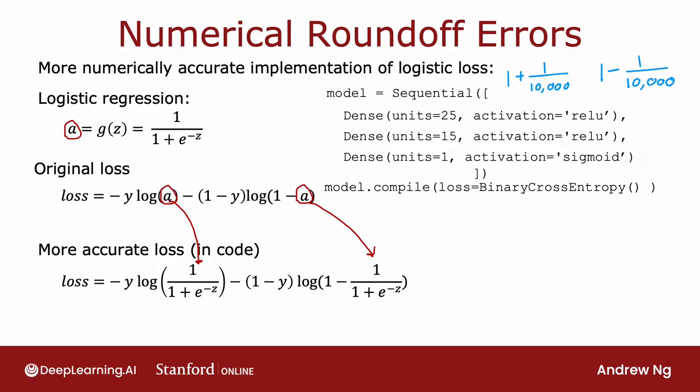This original implementation was insisting on explicitly computing a as an intermediate quantity. But instead, by specifying this expression at the bottom directly as a loss function, it gives TensorFlow more flexibility in terms of how to compute this and whether or not it wants to compute a explicitly. The code you can use to do this is shown here. What this does is it sets the output layer to just use a linear activation function, and it puts both the activation function, 1 over 1 plus e to negative z, as well as this cross entropy loss into the specification of the loss function over here. That's what this from logits equals true argument causes TensorFlow to do.